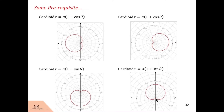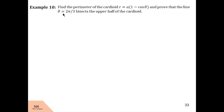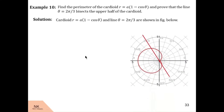Now let us see examples. In this example, we are asked to find the perimeter of the cardioid r is equal to a into 1 minus cos theta, and we are asked to prove that the line theta is equal to 2 pi by 3 bisects the upper half of the cardioid. Let us first draw this cardioid and the line theta is equal to 2 pi by 3. This is how the cardioid can be drawn and the line 2 pi by 3 can be drawn like this.